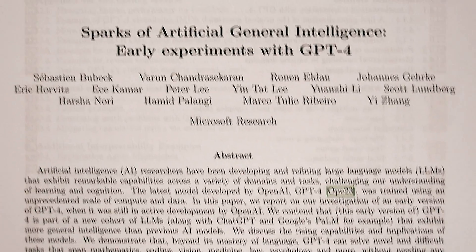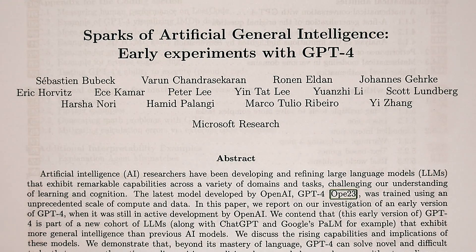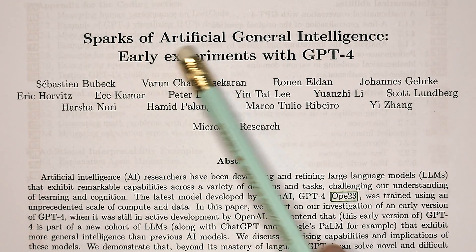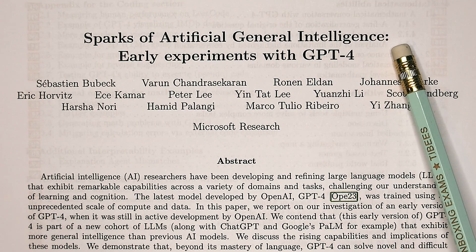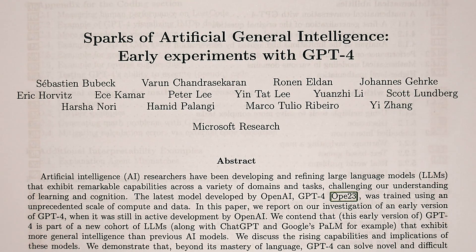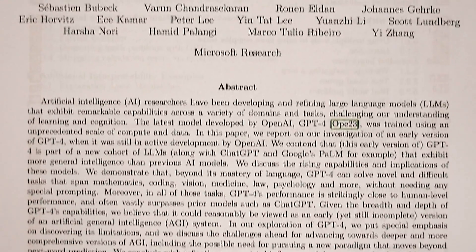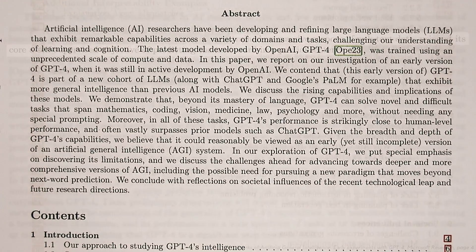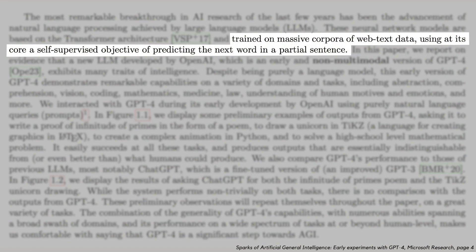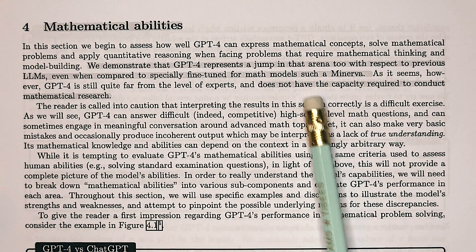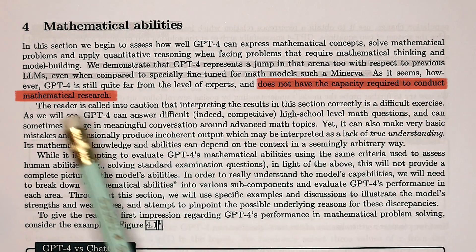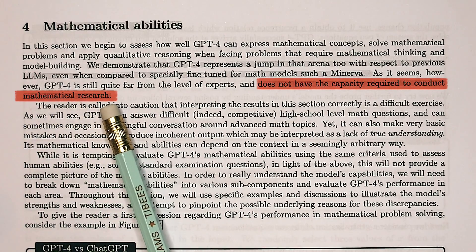This recent paper from Microsoft analyzed the abilities of GPT-4 and said there were sparks of artificial general intelligence, which refers to AI that is broadly intelligent at or above human level and not just good at one specific task. They mention that ChatGPT is trained on a massive amount of web text data and uses, at its core, a self-supervised objective of predicting the next word in a partial sentence.